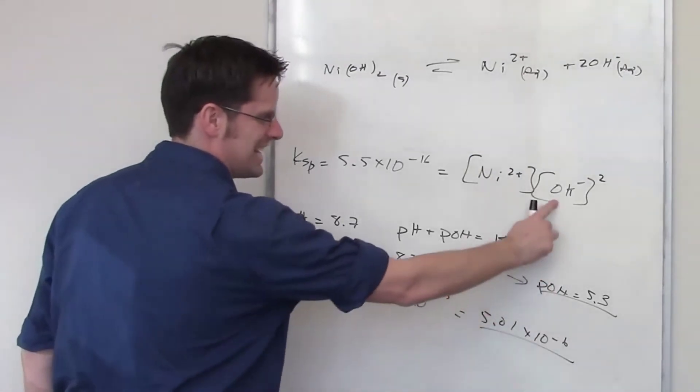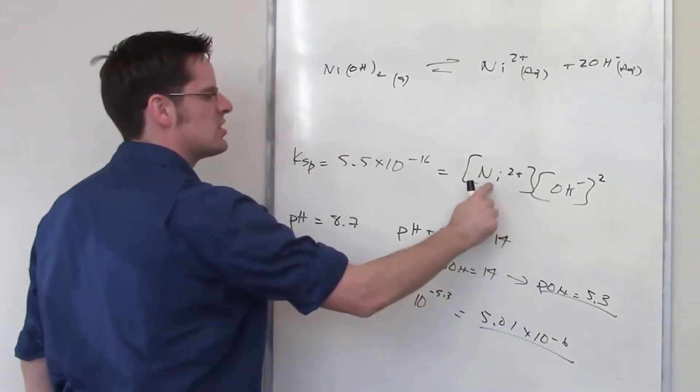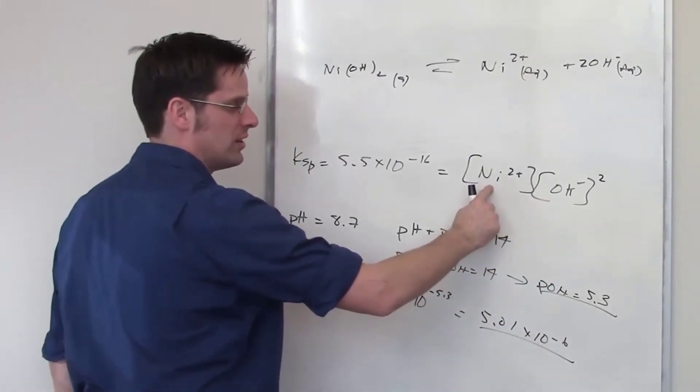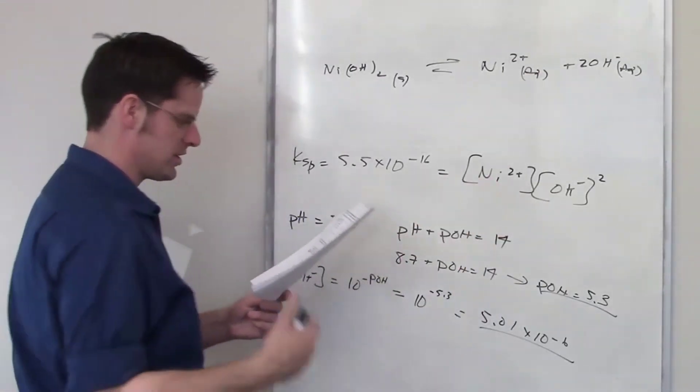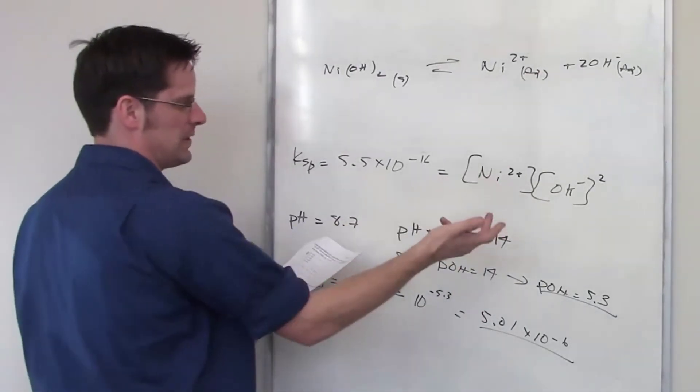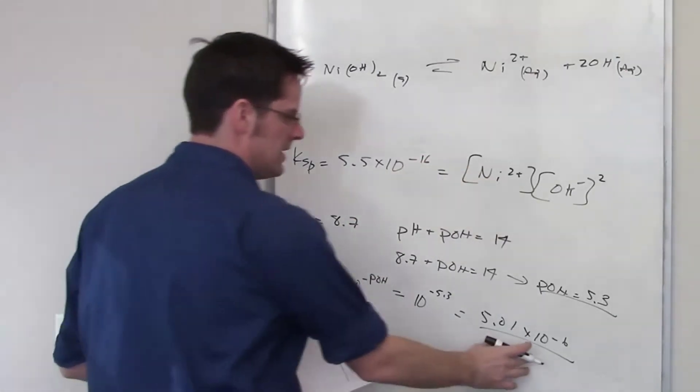So all I have to do is throw that number in here and then solve for nickel 2 plus. I solve for nickel 2 plus. That is answering the question because the question is asking me how much nickel 2 plus do I need in order to get precipitation to occur. So let's go ahead and do that.